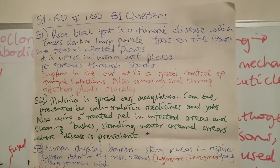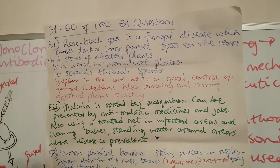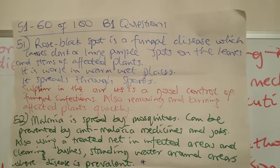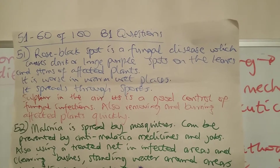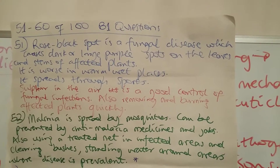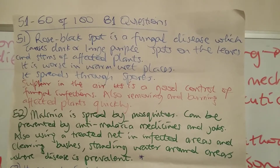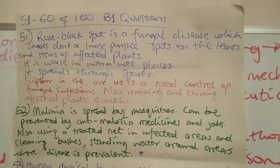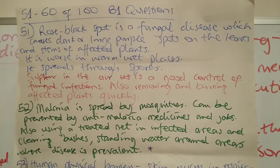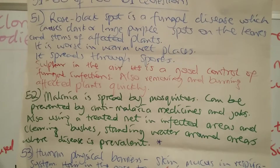Question 51 asks you to state and explain rose black spot: its symptoms, how it spreads, and how it can be controlled. Rose black spot is a fungal disease which affects rose plants, causing dark or large purple spots on the leaves and stems of affected plants. It is worse in warm, wet places and it spreads through spores. Spores that are produced can fall on the ground and stay there for a long time until the rainy season returns and re-affect plants.